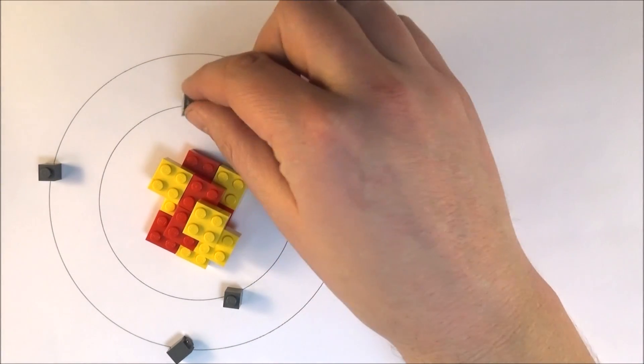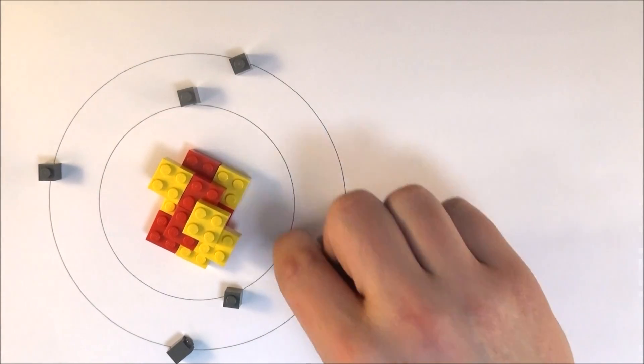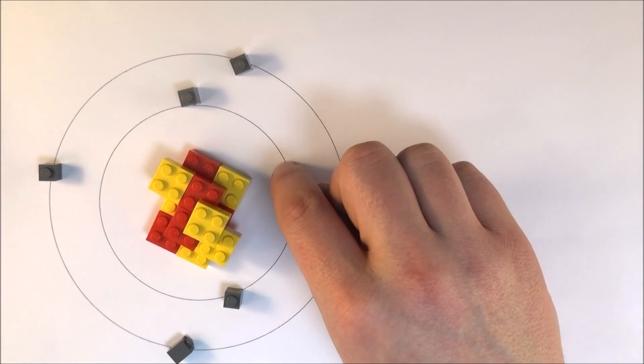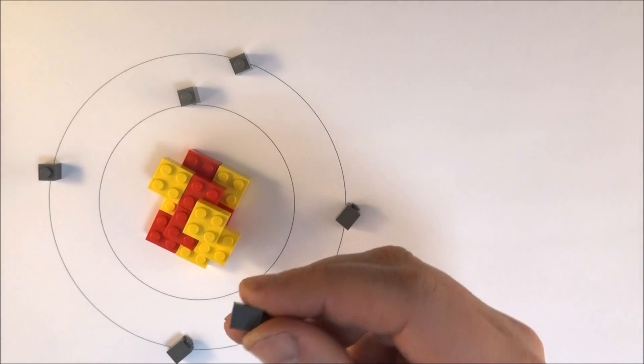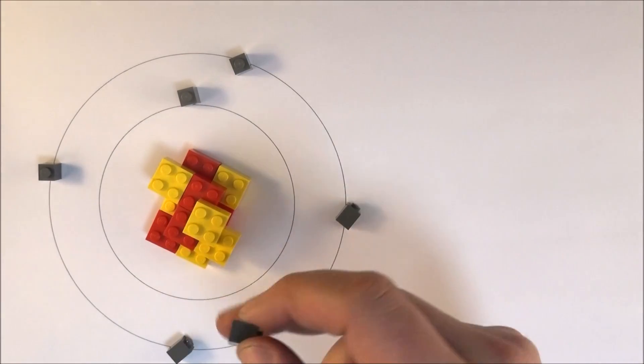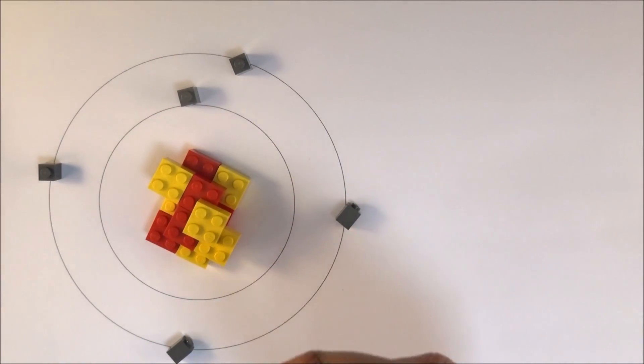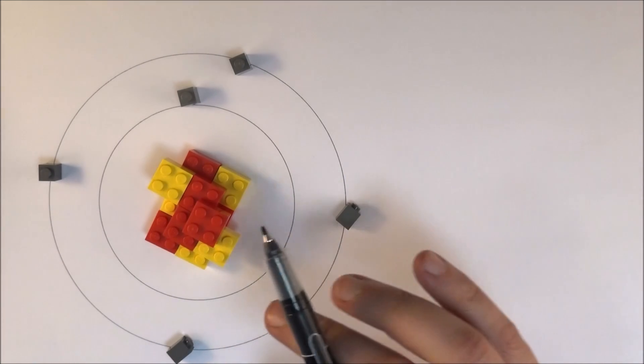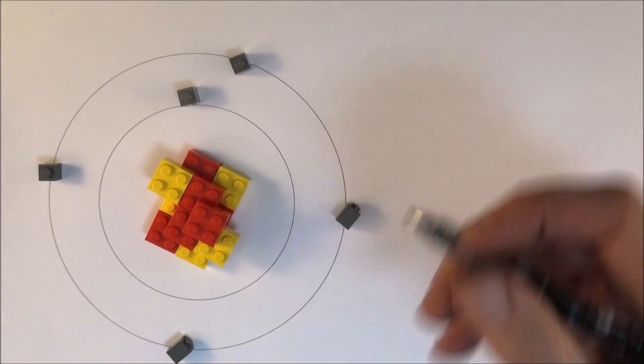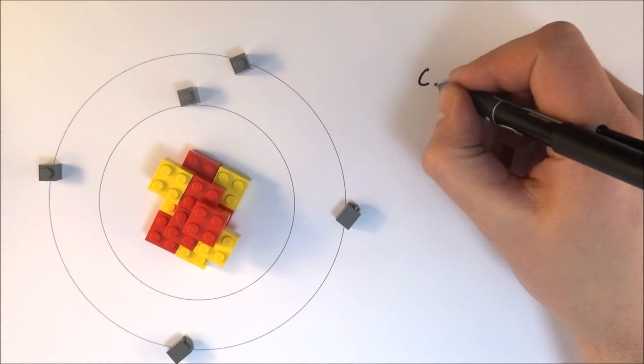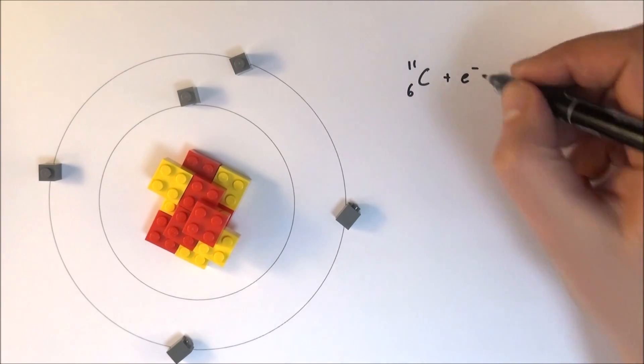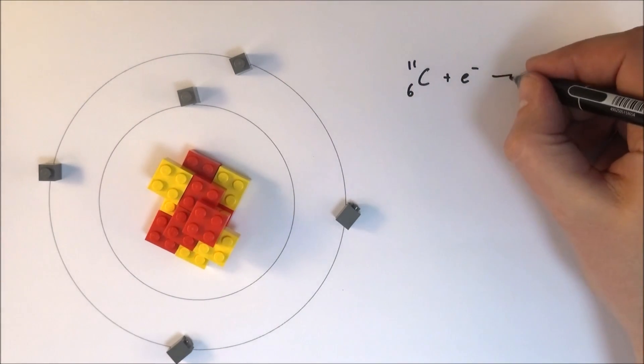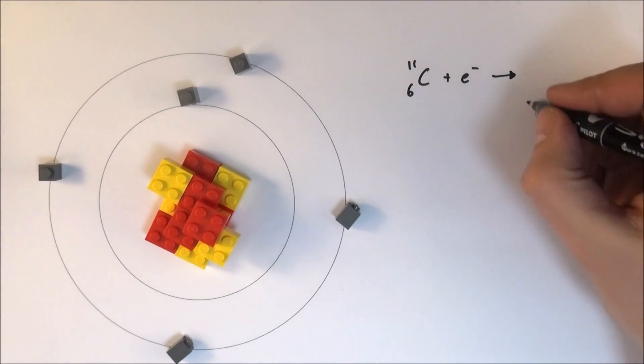And what happens is that basically it captures one of the electrons from the inner shell, and the inner shell is also known as the K-shell, which is also what's called K-capture. And effectively one of these things here, basically as it goes near to the nucleus, it gets captured by a proton. The proton turns into a neutron, and what we then have is a different element. So if we think about that, carbon-11, we have an electron which is grabbed by that, and then this means that we only now have five protons left.